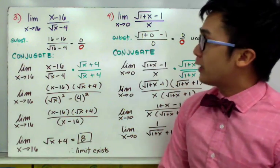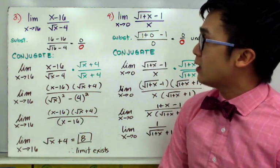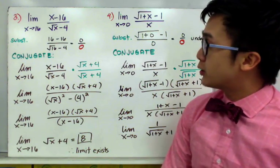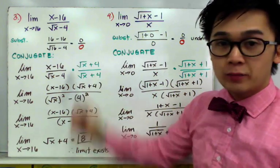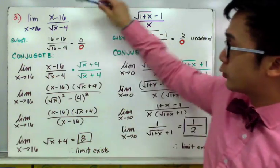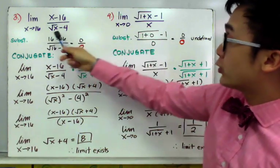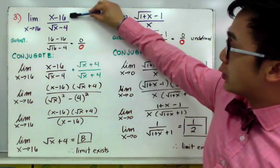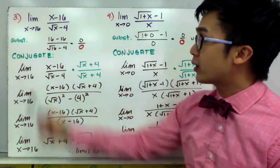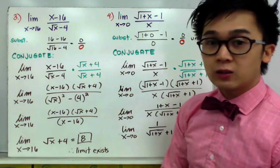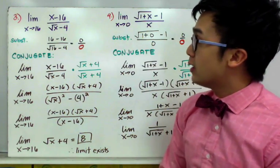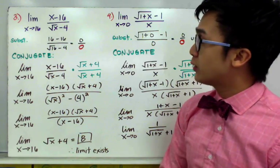For example 3, we have the limit of x minus 16 all over the square root of x minus 4, as x approaches 16. By substitution the denominator is 0, so the function is undefined. When you see a radical in the numerator or denominator, the technique to use is the conjugate of that radical expression.